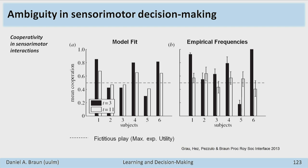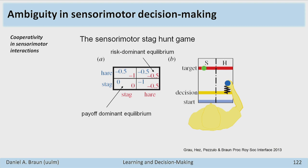The same subject played many times. We used a computer player because with two human subjects you can only observe once and that's it. With the computer player we could set different ambiguity attitudes, making it more or less cooperative in the beginning. We told subjects they would play against a computer player and had to decide what to do. They were just playing the sensory-motor game — they didn't even know what it meant to cooperate or not.